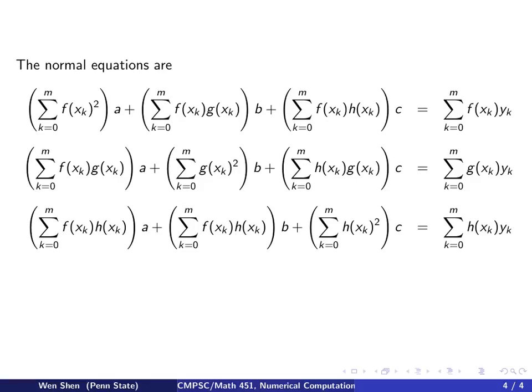So this term comes from summation over f(x_k) squared times a, and since a has nothing to do with k, we can take it out, and we can sum all this up. This becomes a number, and that multiplies by a.